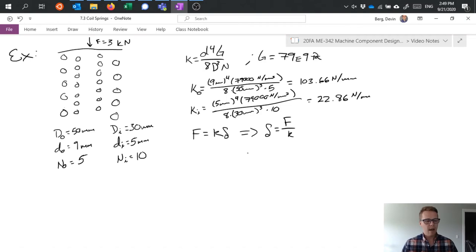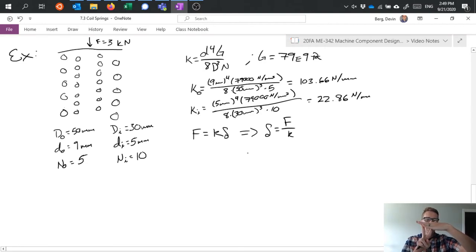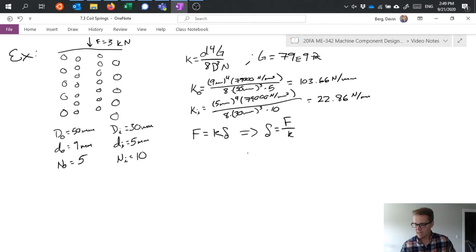Well, we need to kind of think about what's happening, right? We have these two springs acting together. And if I apply a load uniformly to the two of them, they're both going to push back with some force in opposition to the force we apply and the amount at which they push back is going to be proportional to their spring rate.